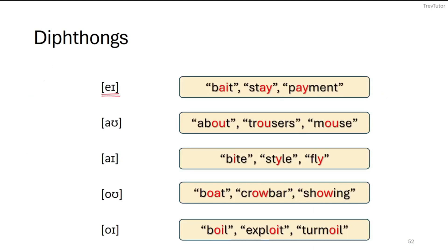For the diphthong /eɪ/, examples are 'bait,' 'stay,' and 'payment' — this is the 'a' sound transitioning to /iː/. We don't have /e/ on its own as a vowel in English; it only appears as part of a diphthong. For /aʊ/, this starts a little more central than a regular /ɑ/, more like 'ah' with a hat — so we say 'about' not 'a-bot.' Examples: 'about,' 'trousers,' 'mouse.'